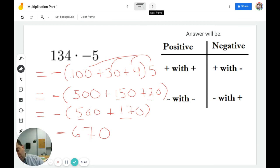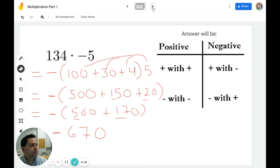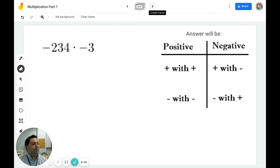Let's try one more. In this example, I have negative 234 times negative 3. A negative times a negative is going to be a positive. And then I can break 234 up into 200 plus 30 plus 4. And we're going to multiply this entire quantity by 3.